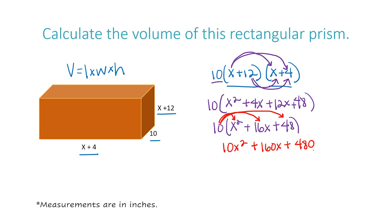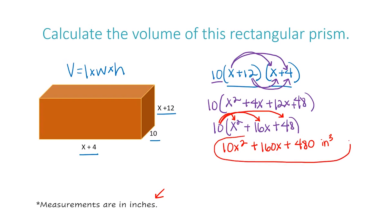I have now multiplied the length times the width times the height, and this is my final answer. I just need to add my units. The problem tells me measurements are in inches, so this means inches cubed. When dealing with volume, the exponent is always 3 because we multiplied three separate sides — your units are in a 3D dimension. So the final answer is 10x squared plus 160x plus 480 inches cubed.